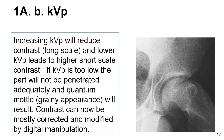If you don't use enough KV, you get noise and a grainy appearance — photon starvation, quantum mottle — a noisy image, no good. In digital imaging, you can get away with using a lot less radiation or a lot more, but if you go down too much, you get noise.